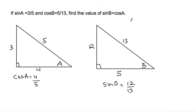So to find sin B plus cos A, we would take sin B, which is 12 over 13, and add cos A, which is 4 over 5.